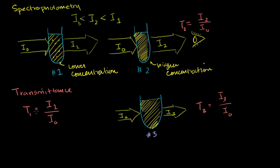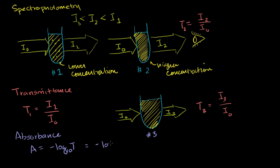Another definition, which is derived from transmittance and has pretty neat properties, is the notion of absorbance. Here we're trying to measure how good a solution is at absorbing. Transmittance measures how good you are at transmitting — a higher number means you're transmitting a lot — but absorbance is the opposite. If you're good at transmitting, you're bad at absorbing. Absorbance is defined as the negative log of transmittance — base 10 logarithm. Or equivalently, it's the negative log of the light transmitted over the light input. If transmittance is a large number, absorbance is a small number, which makes sense.